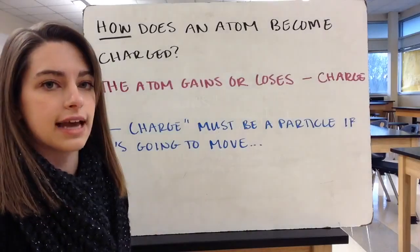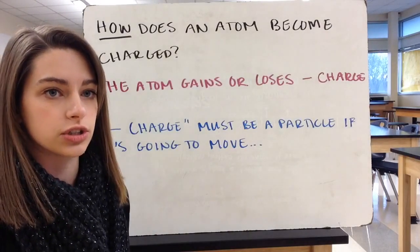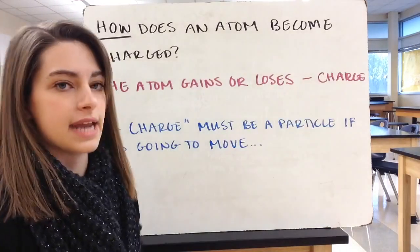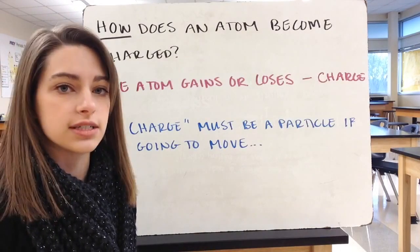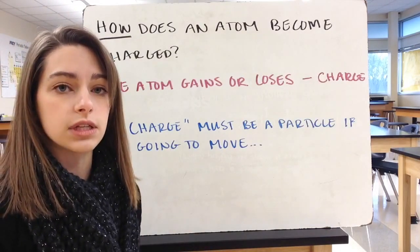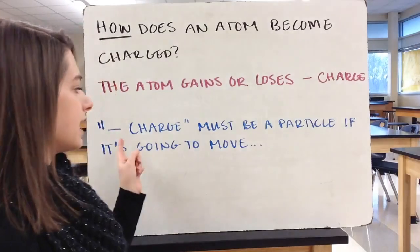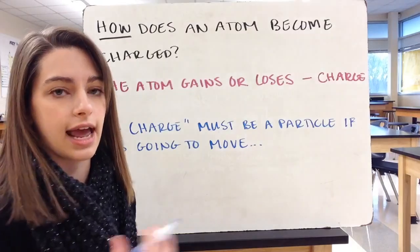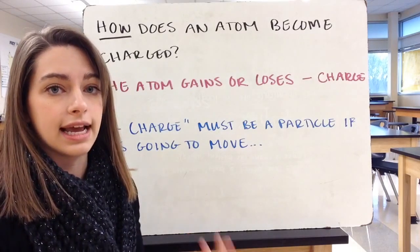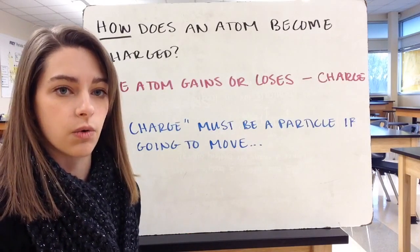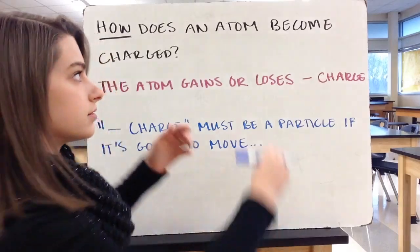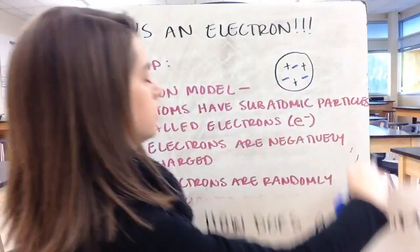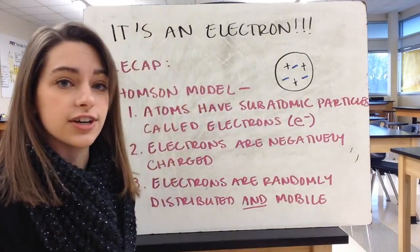So how exactly does an atom become charged? Well, the atom is going to gain or lose its negative charges. Notice in that previous example, I wasn't changing the positives. I was only changing the negatives. The negative charges have to be a particle if they're going to move. If something is going to enter or exit an atom, it has to actually be a particle in order for it to have mobility.